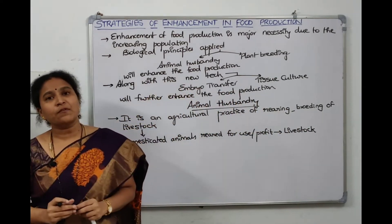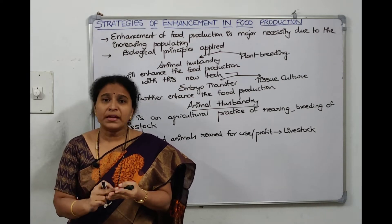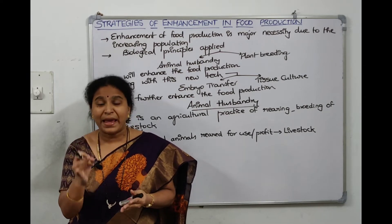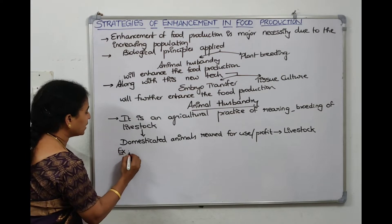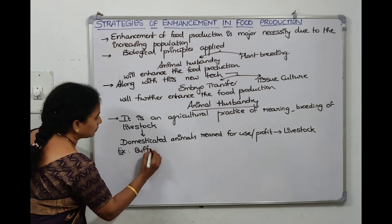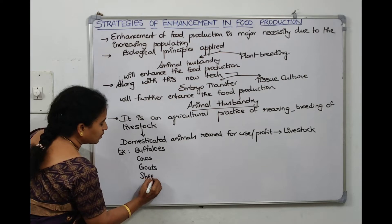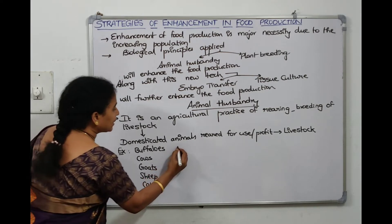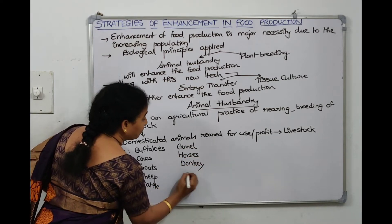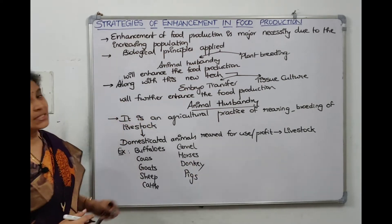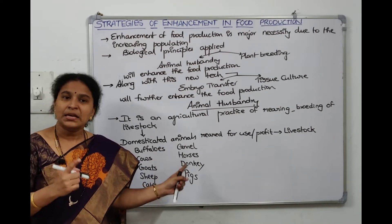Examples of livestock include cattle such as buffaloes, cows, goats, sheep, camels, horses, donkeys, and pigs. All these come under livestock. They are all categories of domesticated animals that we cultivate and consider as livestock.